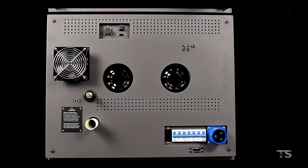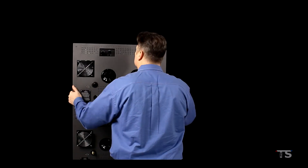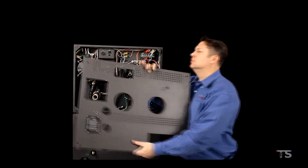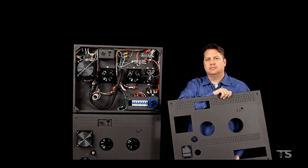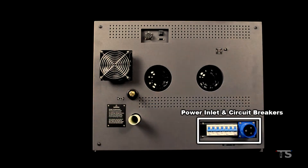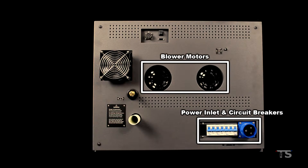At the rear of the chamber, we have the back panel. The back panel is also highly customizable, and your back panel may not have the exact configuration seen here. The back panel can be removed to access the service cavity, which houses many of the electrical and mechanical components for the chamber. Also along the back panel, we have the main power inlet and circuit breakers, the blower motors — which circulate the air in the chamber's workspace — and axial fans, sometimes multiple, used to keep the service cavity cool for the components.